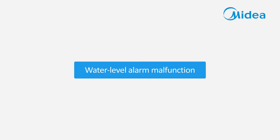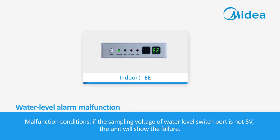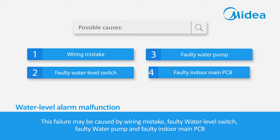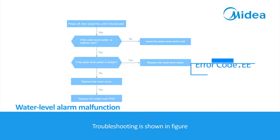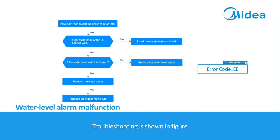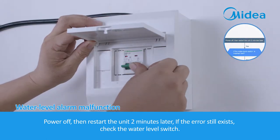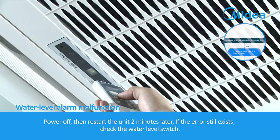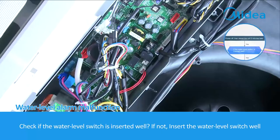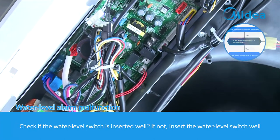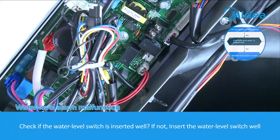Water level alarm malfunction. Malfunction conditions: if the sampling voltage of the water level switch port is not 5 volts, the unit will show the failure. This failure may be caused by wiring mistake, faulty water level switch, faulty water pump, or faulty indoor main PCB. Troubleshooting: power off, then restart the unit 2 minutes later. If the error still exists, check the water level switch. Check if the water level switch is inserted well; if not, insert it properly.